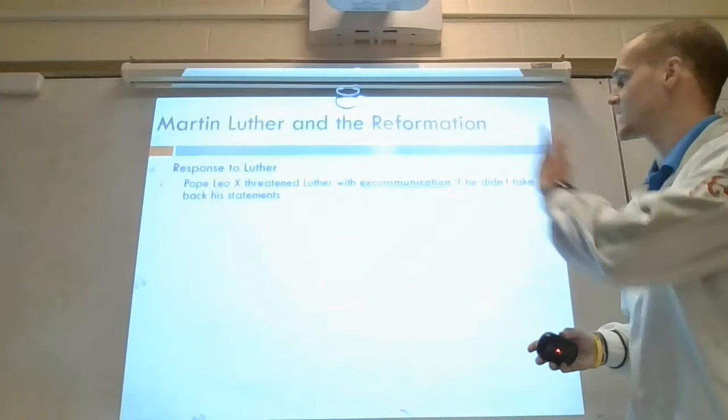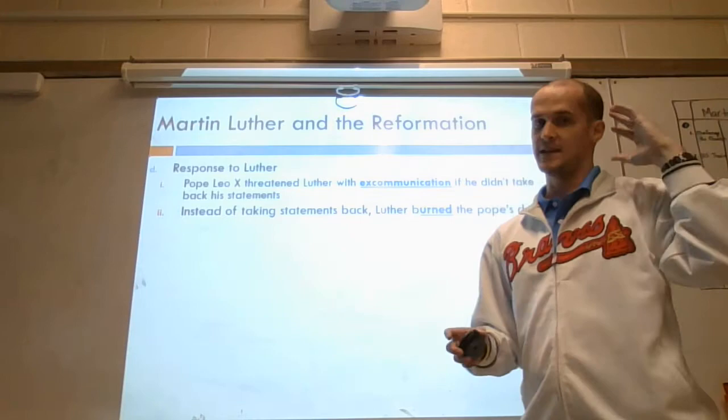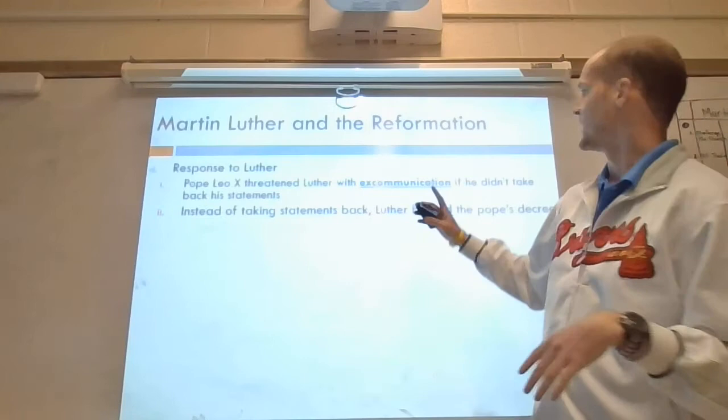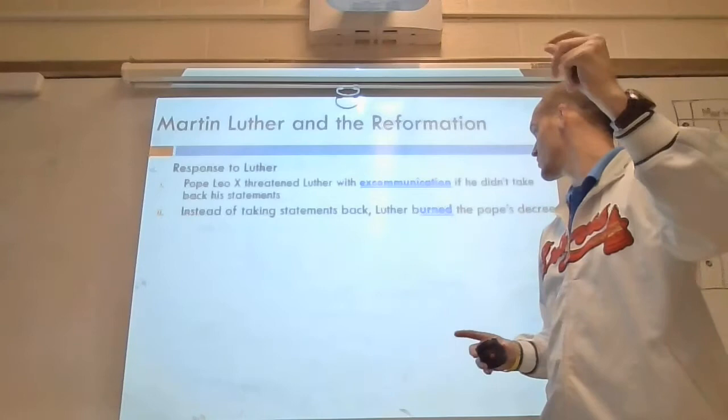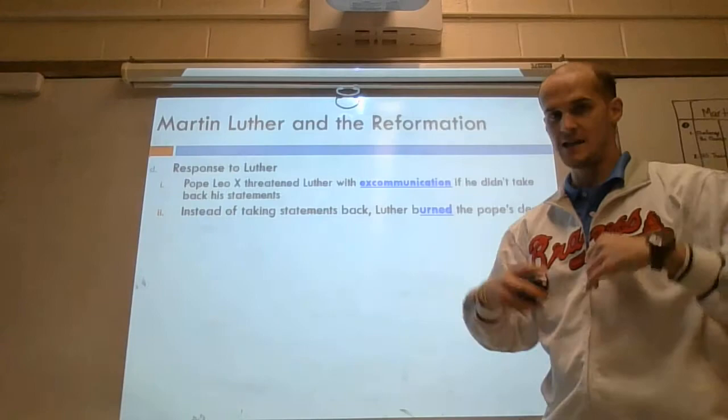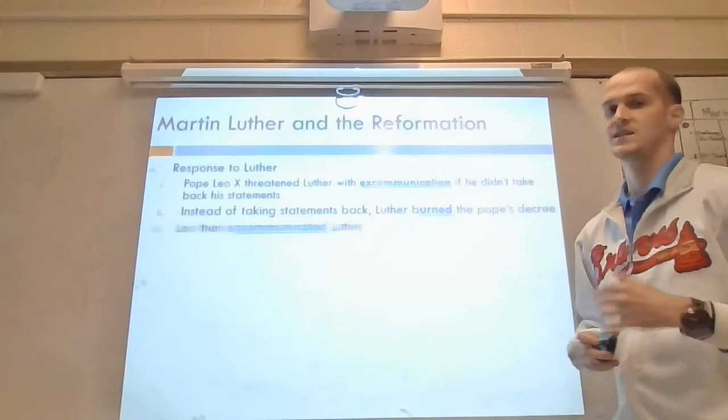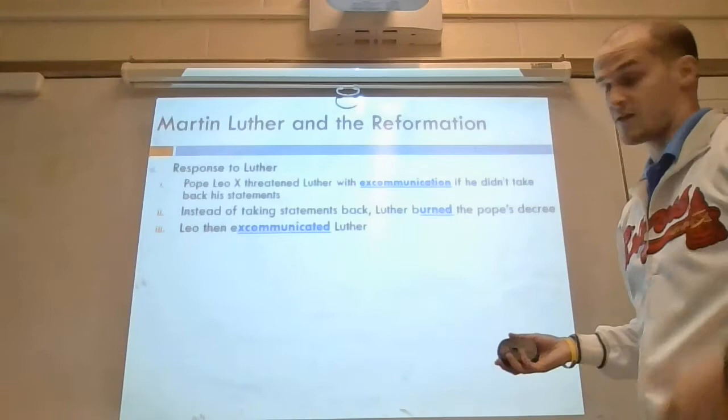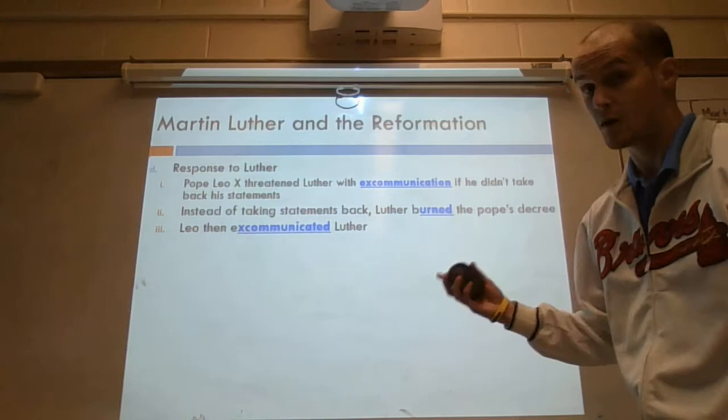The Pope threatens to excommunicate Luther if he doesn't take back his statements. Martin Luther, being the semi-crazy man that he is, gets this letter and instead of taking his statements back, he literally lights it on fire — burns it to ashes in front of everyone. He believes his actions will prove that the Pope is just a man and that everyone is equal in faith. So he burns the letter, and then the Pope excommunicates him. But Luther doesn't care because Luther already quit.